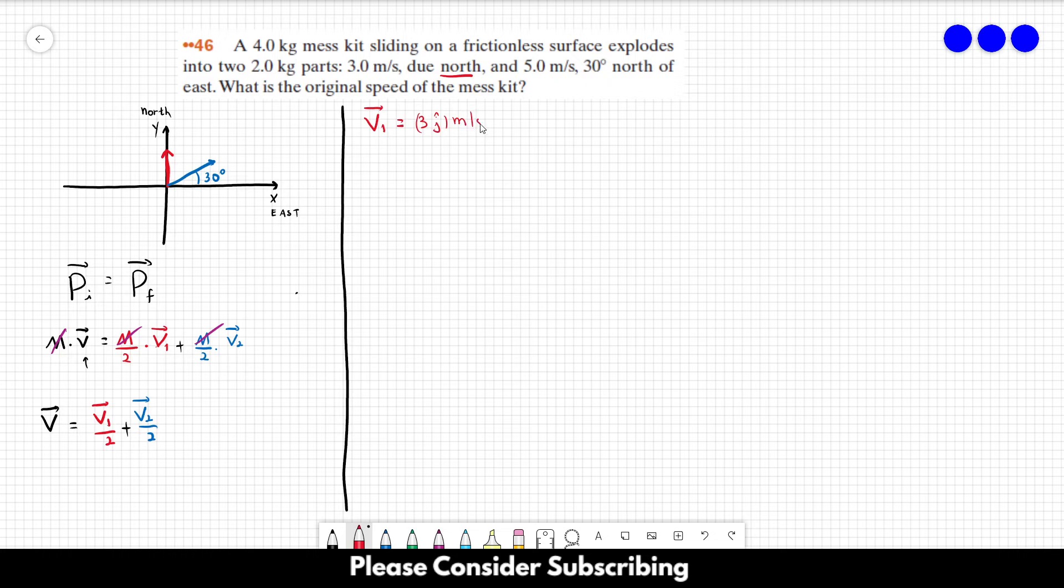As for the blue vector, the blue vector, we have to make some decomposition. So it is 5 times the cosine of 30 degrees in the i direction plus 5 times the sine of 30 degrees in the j direction, also in meters per second.